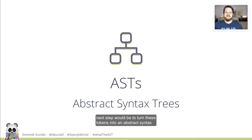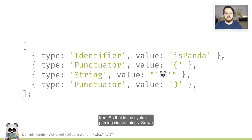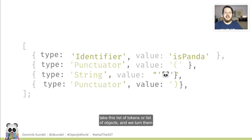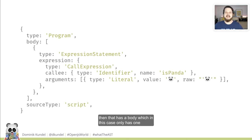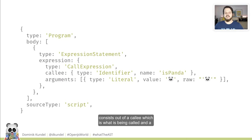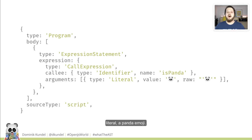Once we have those tokens, the next step is to turn them into an abstract syntax tree — the syntax parsing side of things. We take this list of tokens and turn them into a nested object that represents a tree of how our program is structured. At the top we have a program, which has a body. In this case it only has one expression statement, which has a call expression in it consisting of a callee — what is being called — and a set of arguments. In this case, only one argument, which is a literal of a panda emoji.